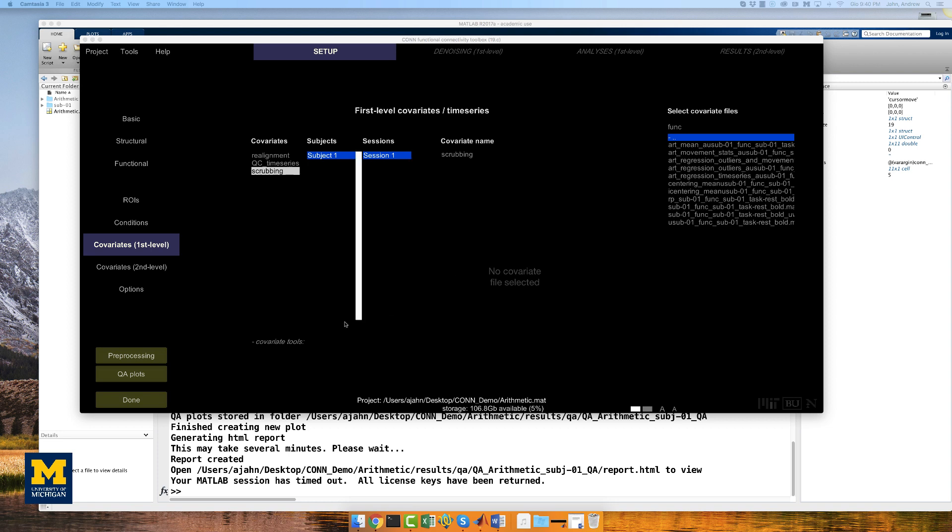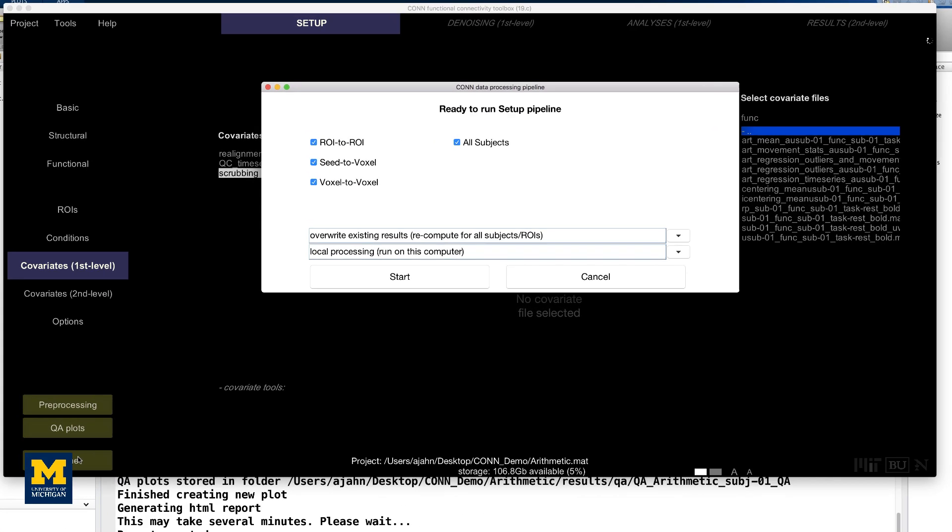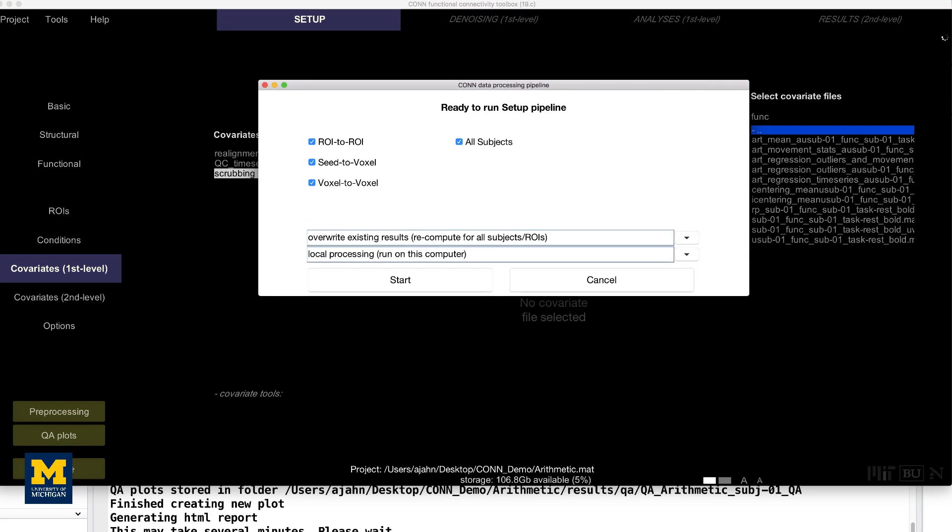To begin denoising the data, click the done button from the setup tab. A new menu will appear prompting you to select which resting state analyses you want to do: any combination of ROI to ROI, seed to voxel, and voxel to voxel. Don't worry now about what these mean, we'll cover them in a later video. All three are selected by default and we'll leave them as they are for now. Click start to begin the denoising step.